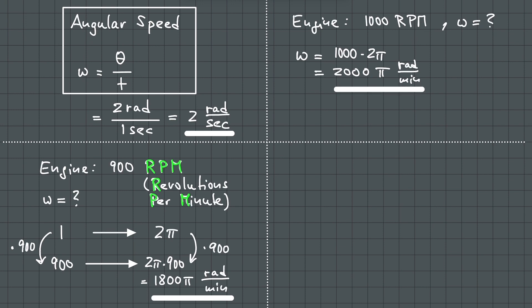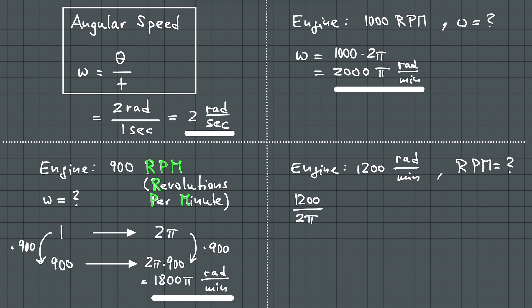What if we have an engine with an angular speed of 1200 radians per minute? How many revolutions per minute is the engine idling? In this case, we do the opposite — we just divide 1200 by 2 pi, which is 600 divided by pi. So, an engine which has an angular speed of 1200 radians per minute idles with 600 divided by pi rpm.